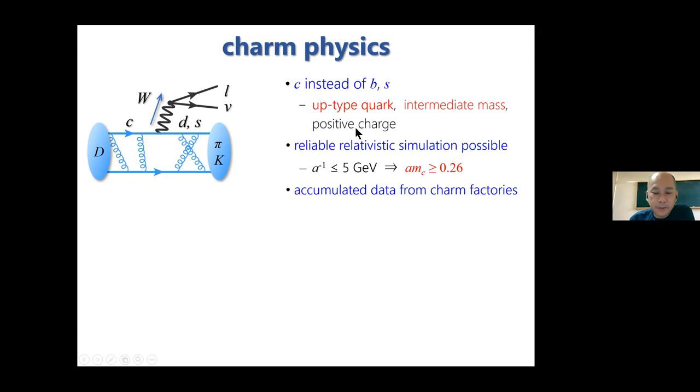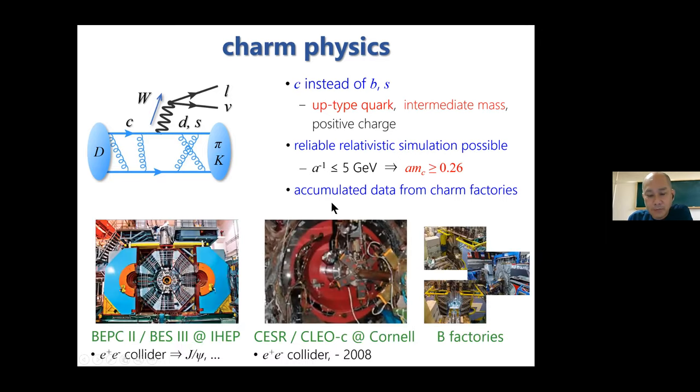Since currently available lattice cutoffs are up to 5 GeV, the amc is very below unity so reliable relativistic simulation is already possible. We have accumulated data from charm factories, the so-called charm factories.